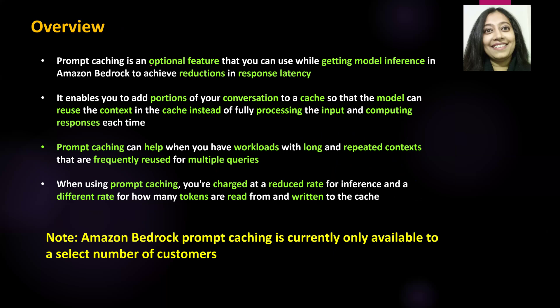Prompt caching is an optional feature that you can use while getting model inference in Amazon Bedrock to achieve a reduction in response latency. In simple words, what we are doing is caching the prompt and the inference generated by the model for that particular prompt. Then whenever a subsequent request is received, rather than processing the prompt all over again, we use the prompt and inference stored in the cache to generate a response and return it to the user.